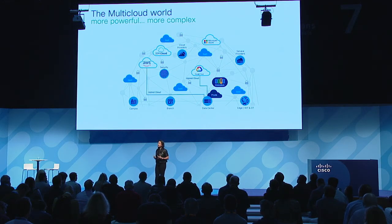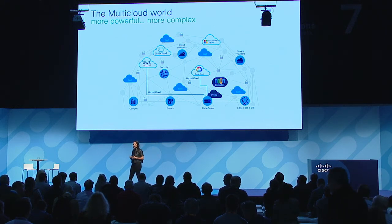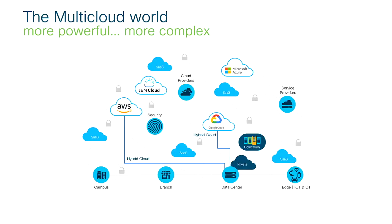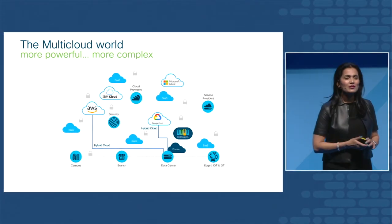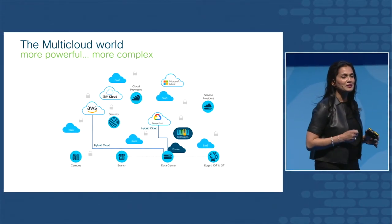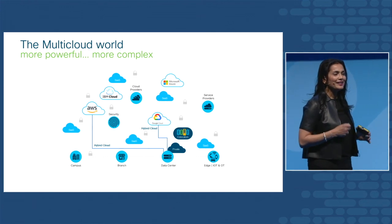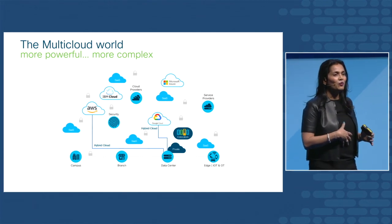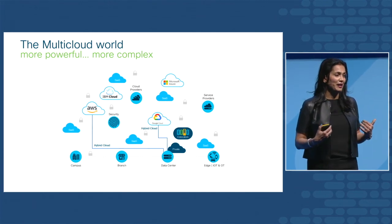Your world is also getting complex because your security policies have to follow your application — how do you ensure that? So when you look at this multi-cloud and hybrid world, it's increasingly more powerful because of all the capabilities you can leverage, but the complexity also comes along with that. What does hybrid and multi-cloud mean? Because it kind of means different things to different people.